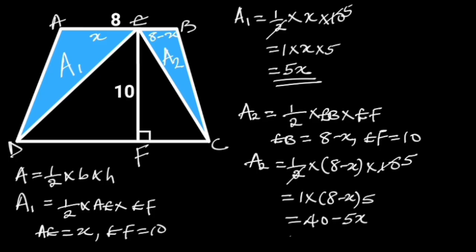Now observe that the area of the shaded portion is equal to the area of Triangle ADE plus the area of Triangle EBC. Since the area of Triangle ADE is equal to 5X square units, and the area of Triangle EBC is equal to 40 minus 5X square units, it follows that